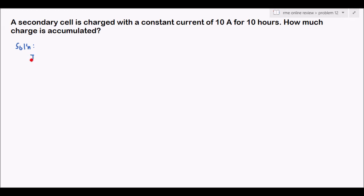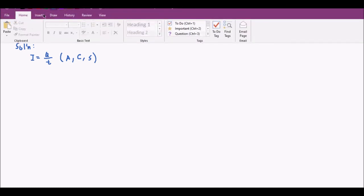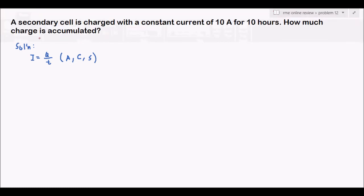This is one of the problems involving current, charge, and time. By definition of current, current equals charge per unit time. Checking the units: the unit for current is ampere, the unit for charge is coulomb, and the unit for time is seconds.